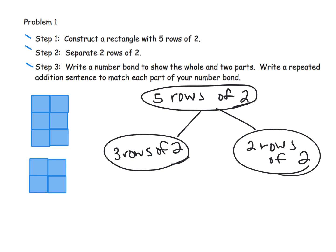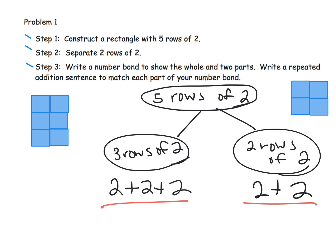Now it says we have to write the repeated addition. So one way to do that, repeated addition, would be to say this is two plus two plus two, because we have three rows of two. So two plus two plus two. And then this guy being over here would be two rows of two, so that's two plus two. And so that is the repeated addition that they were talking about.